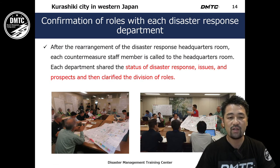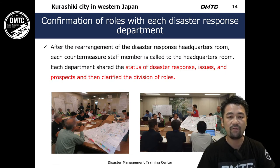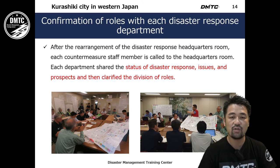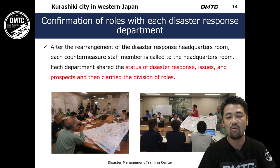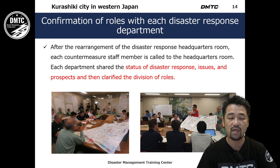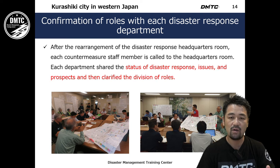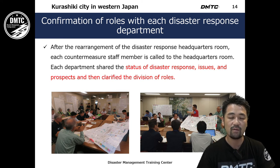Another graph shows a different city, but again the biggest demand for human resources is shelter management. This confirms that across different disasters, shelter management is one of the biggest problems after a disaster occurs. That is why thinking about how to arrange and manage people assigned to shelters is a key point.